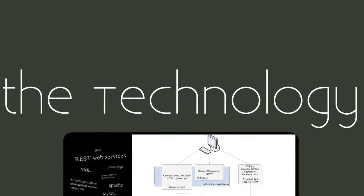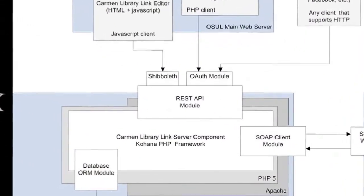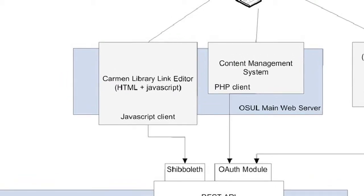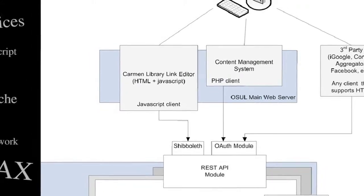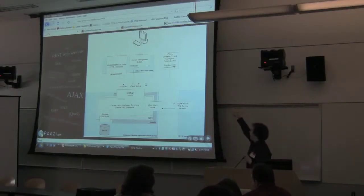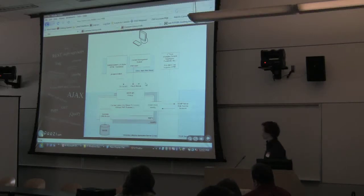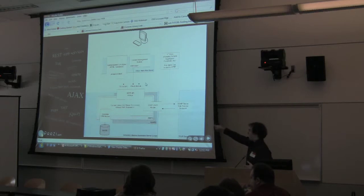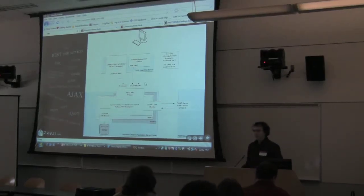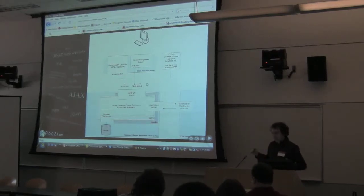Now let's go back to the technology. The Carmen Library Link has a REST API on top of our server. The editor is just a JavaScript client which communicates with the REST API. Since it's a REST API, we can use that API anywhere else — the content management system we're implementing can pull in widgets and items directly. We can also pull this content into iGoogle or anything else. To communicate with Teller, we use SOAP web services — that's all XML — and this application handles all of that. It's seamless to the user, and they can create great webpages for resources that they care about, delivered directly to students as specialized content.